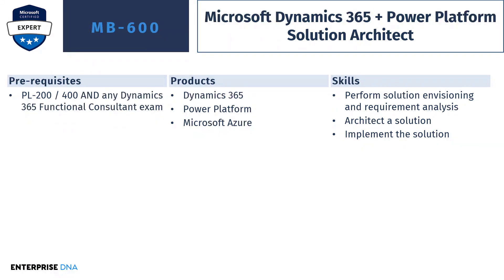Finally, we have MB 600, another expert level certification, very similar to Power Platform Solution Architect, but it also adds Dynamics 365 to the mix. In this one, you need PL 200 or PL 400 like before, but you also need a Dynamics 365 functional consultant exam as well. Dynamics 365 is a whole host of other products, and what Microsoft wanted to do is create a certification that shows both Dynamics 365 skills and Power Platform skills in one. So the products include Power Platform, Microsoft Azure, and now Dynamics 365 as well. The skill set is the same: performing solution envisioning, looking at requirements, creating a solution, and implementing it for your business needs.